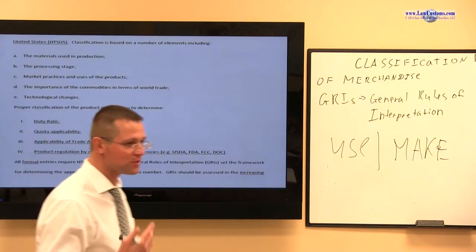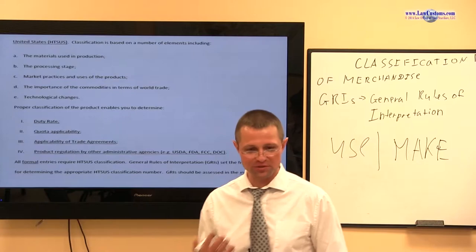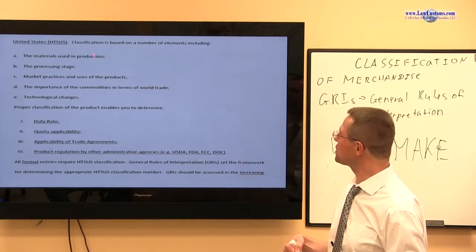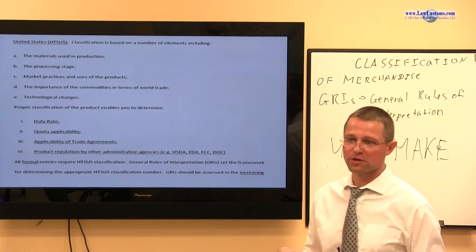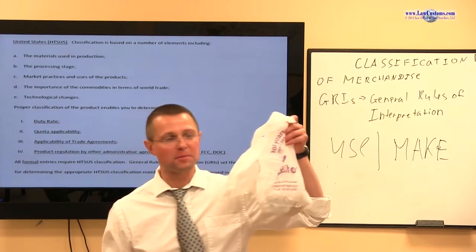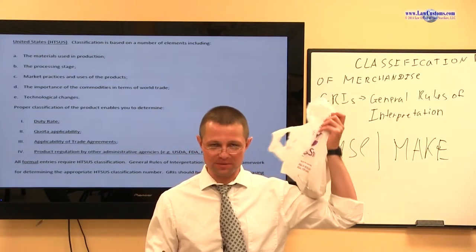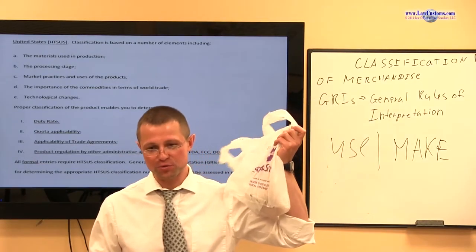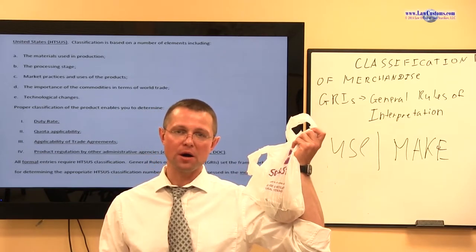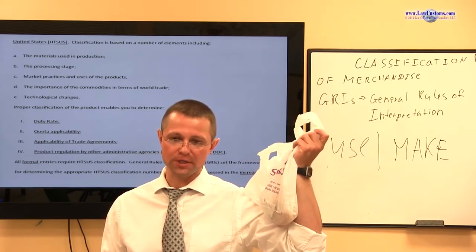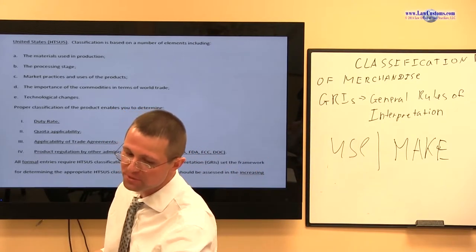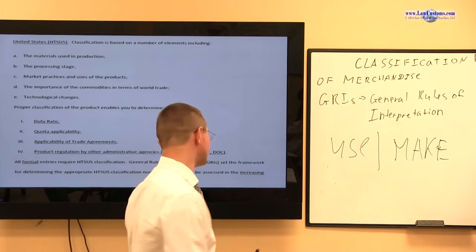There is a list of factors important in the decision-making process. The factors include materials used in production. In the case of a bag, if we determine it is a plastic bag, we further need to determine: is it made out of polymer of vinyl chloride, polymer of ethylene, or some other plastic material?